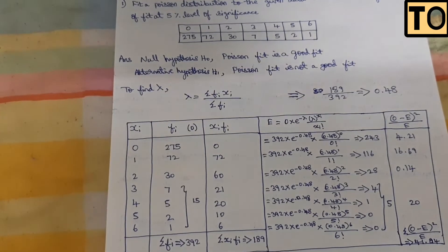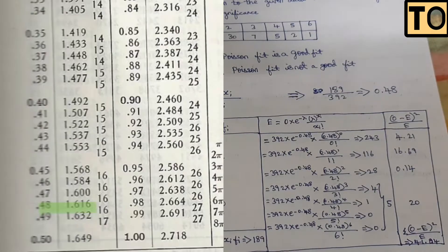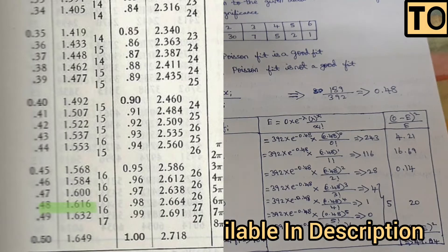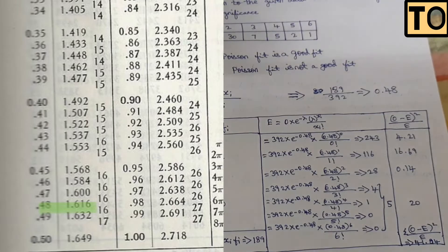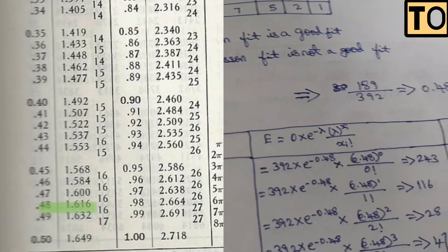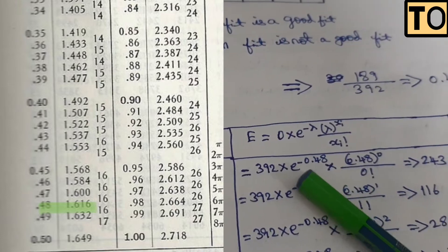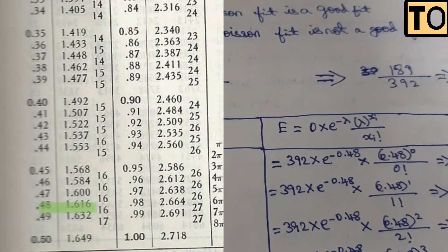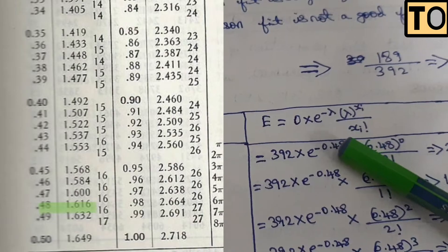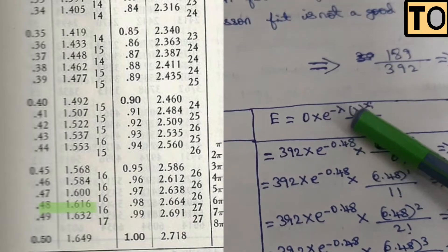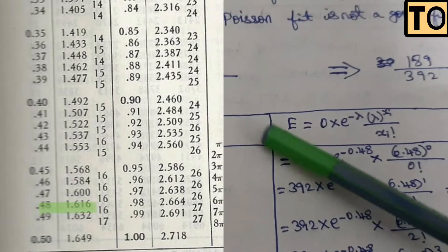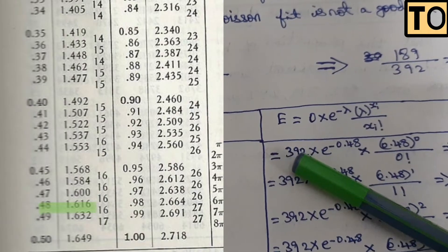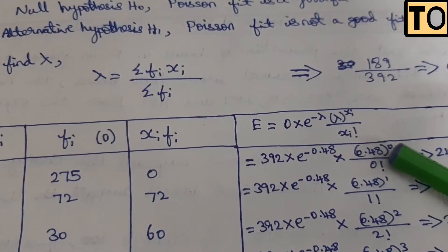The exponential value is given on screen. You have e to the power of 0.48, and the value is 1.616. Since we need e to the power of minus 0.48, we take 1 divided by e to the power of 0.48, which equals 1 divided by 1.616. Also, anything to the power of 0 is 1, and 0 factorial is 1.